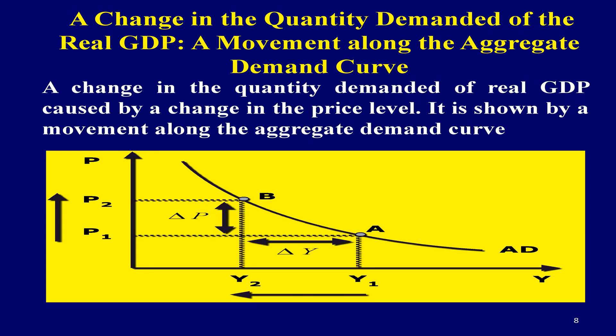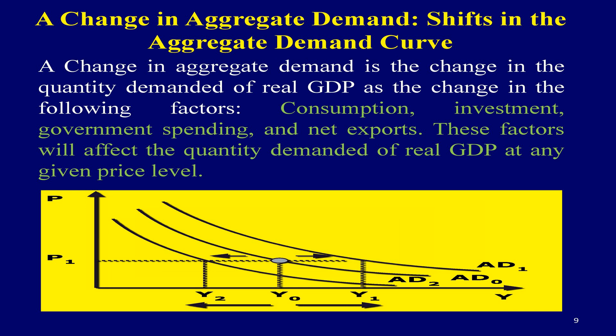The change in the quantity demanded of real GDP is caused by a change in the price level. It is shown by a movement along the aggregate demand curve. For example, as price level increases from P1 to P2, the quantity demanded of real GDP will decrease from Y1 to Y2. This change is represented as a movement from point A to point B on the AD curve.